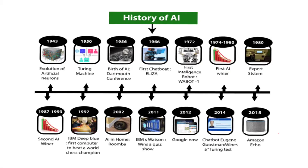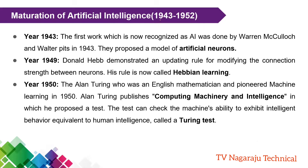First, coming to the range 1943 to 1952, this period is called the maturation of artificial intelligence. In the year 1943, the first work recognized as artificial intelligence was done by two scientists, Warren and Walter. They developed a model of artificial neurons — they simply prepared a model which consists of artificial neurons.